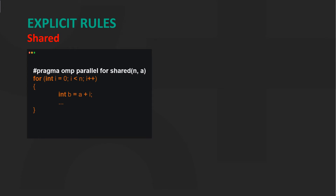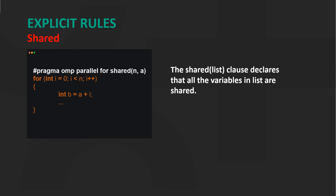Always remember that shared variables introduce an overhead, because one instance of a variable is shared between multiple threads. Therefore, it's often best to minimize the number of shared variables when good performance is desired.